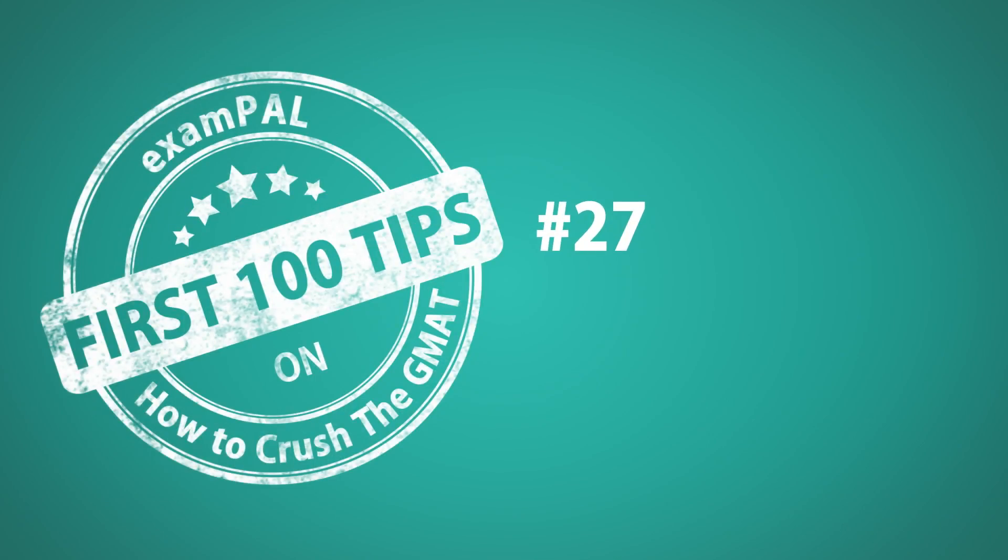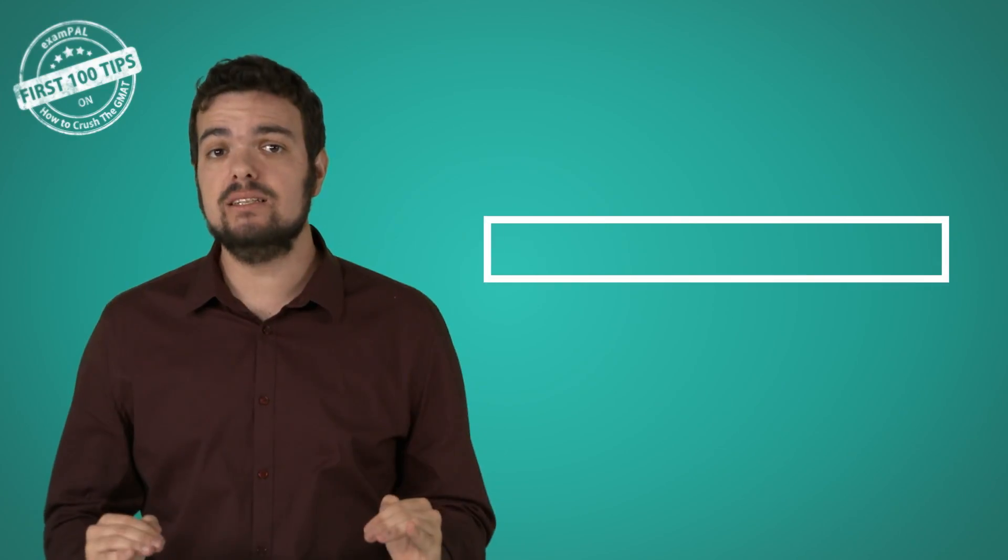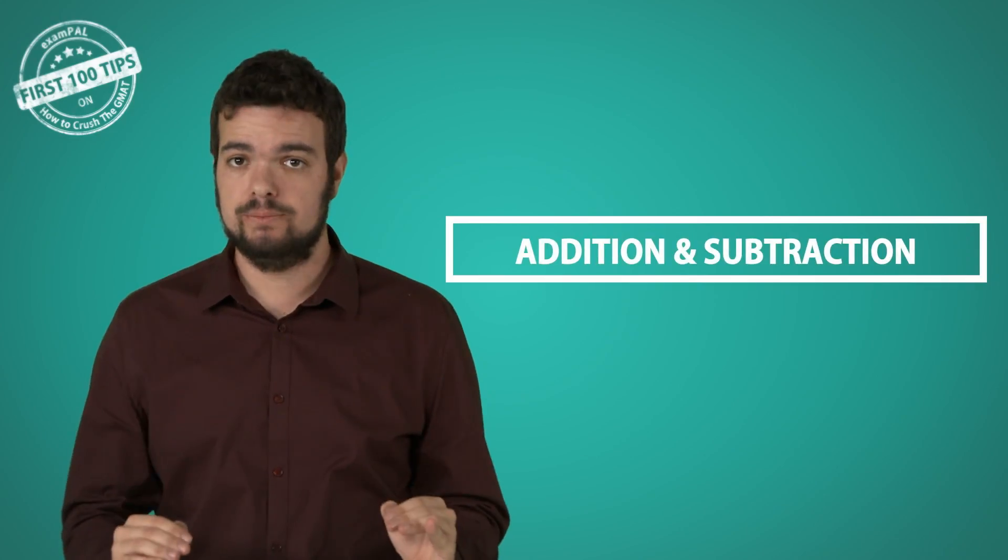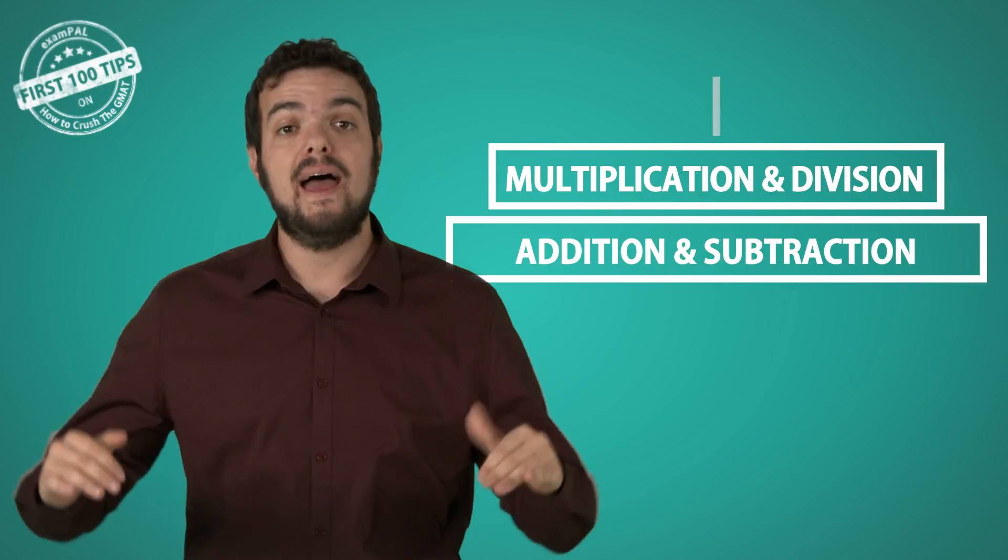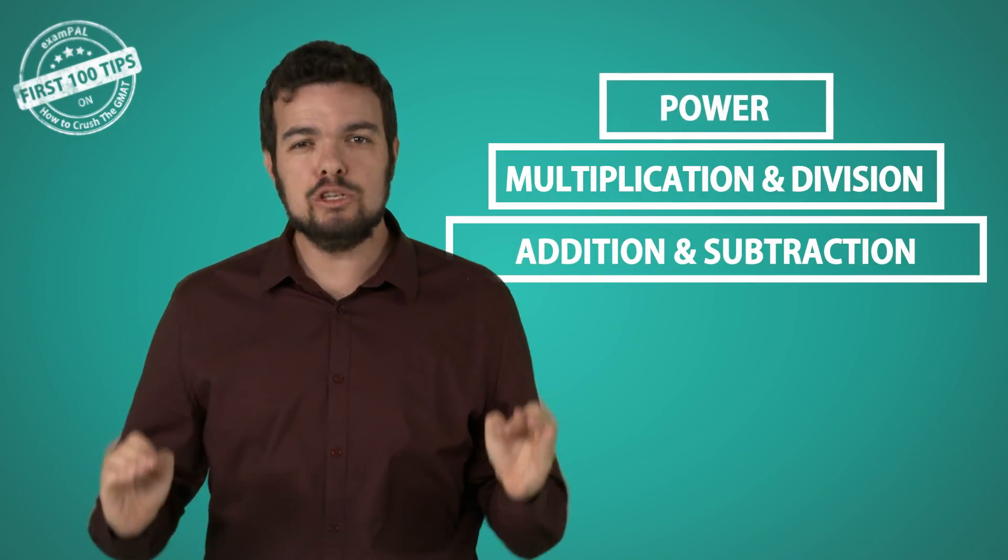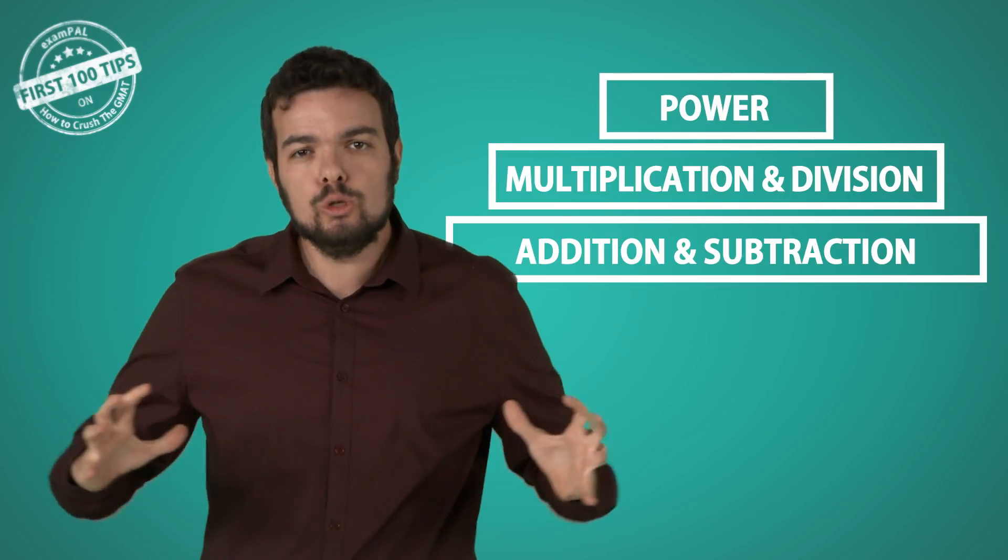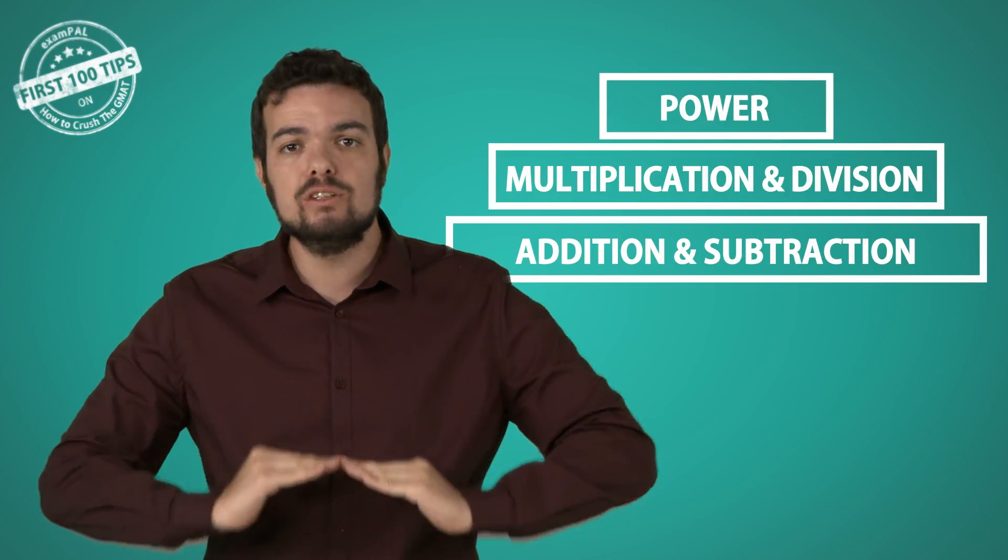Number 27. How should you memorize power's formulas? Here's the logic behind these formulas. Think of the basic operations as belonging to three levels. The basic level, addition and subtraction. The middle level, multiplication and division. And the high level, power. Now the energy required to merge two expressions into one makes them go one level down. Let's see what I mean by this.